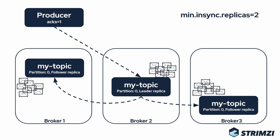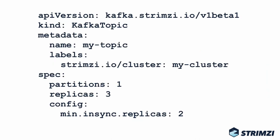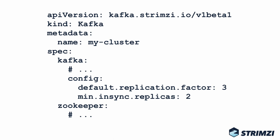The replication factor and the minimal number of in-sync replicas can be configured on a per-topic basis. You can specify them when creating the topic using the Kafka tools or in the Kafka topic custom resource used by Strimzi. You can also set the defaults in the broker configuration. The default replication factor will be applied to all auto-created topics in case you have topic auto-creation enabled. The default minimal in-sync replicas setting will apply to all topics which do not override this value.